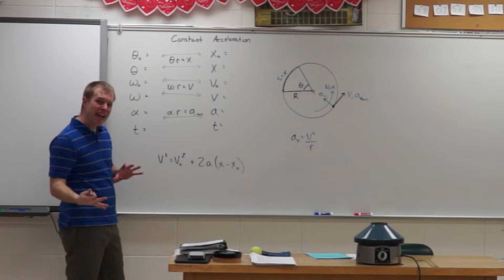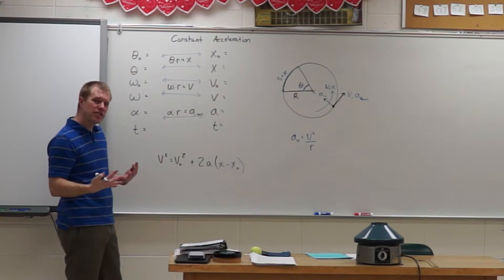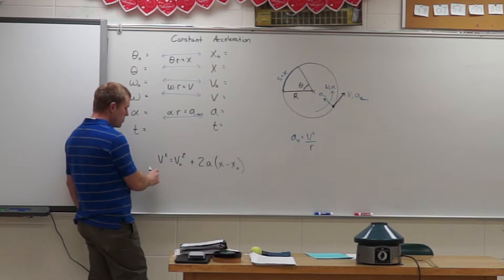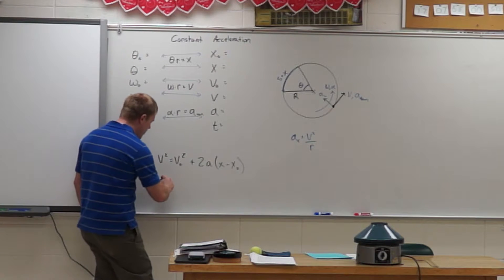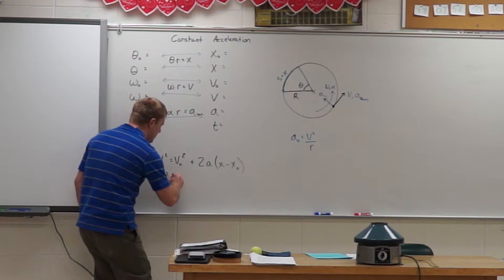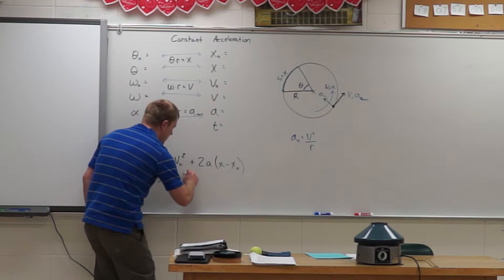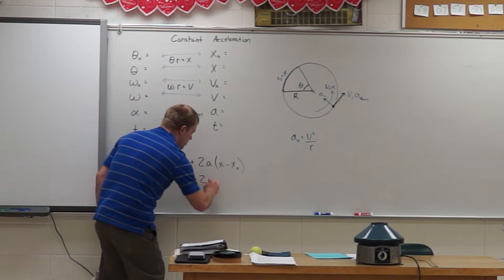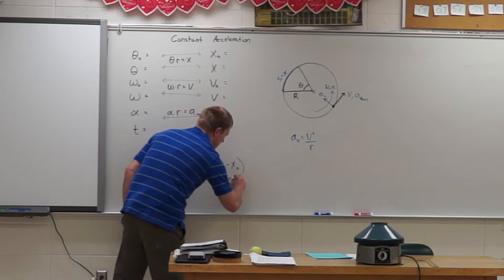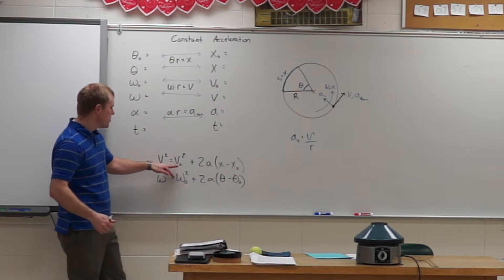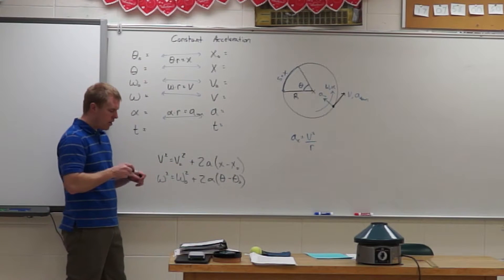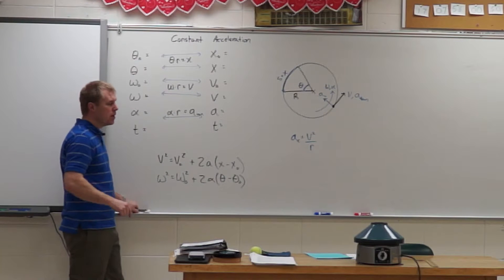Now, the equations are exactly the same for rotational as they are for linear. They just have different variables. So, instead of speed squared, it's going to be angular speed squared. And initial angular speed squared plus 2 alpha times theta minus theta naught. So I'm just substituting in the angular quantities into that equation.